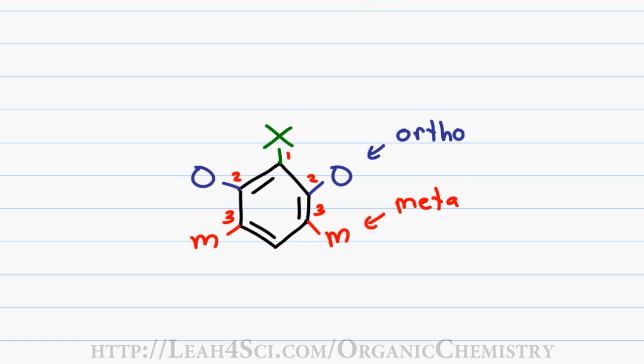And finally, if we look at the carbon directly opposite 1 which is carbon number 4, placing a substituent there gives me the para substituent.